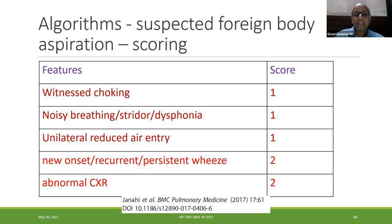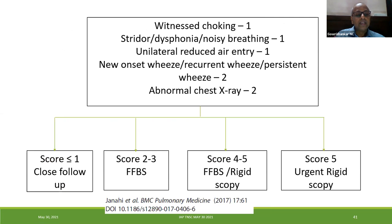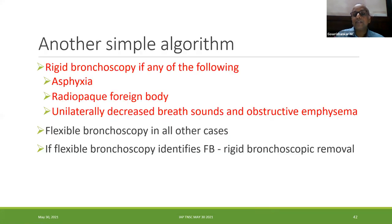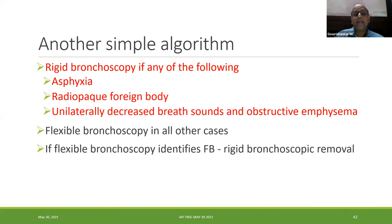Using a scoring algorithm: witnessed choking scores one, noisy breathing scores one, unilateral reduced air entry scores one, new onset recurrent or persistent wheeze scores two, and abnormal X-ray scores two. A score less than one warrants follow-up; two to three warrants flexible bronchoscopy; four to five warrants rigid bronchoscopy; and a score of five means urgent rigid bronchoscopy. Indications for rigid bronchoscopy include asphyxia, radio-opaque foreign body, unilaterally decreased breath sounds, and obstructive emphysema. Flexible bronchoscopy in all other cases — if it identifies a foreign body, rigid scopic removal is the ideal treatment.